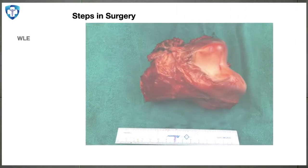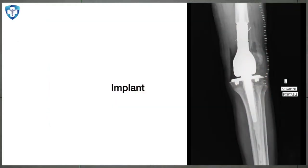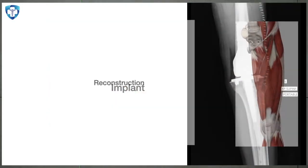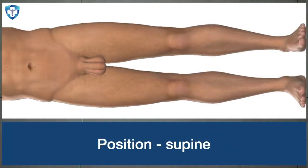There are mainly three steps involved in the surgery. First is a wide local excision of the tumor. Second is a bony reconstruction, and third is a soft tissue reconstruction. We start with the wide local excision.